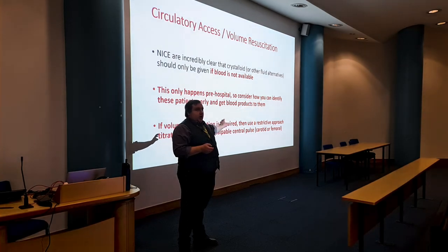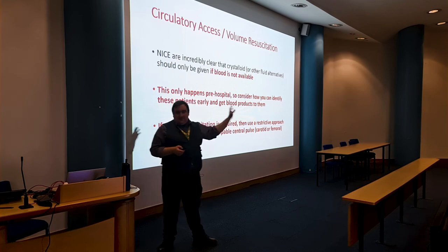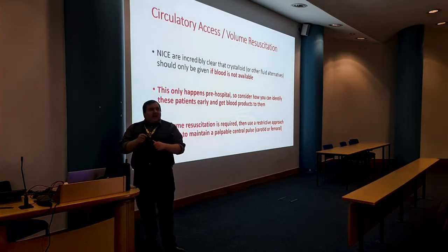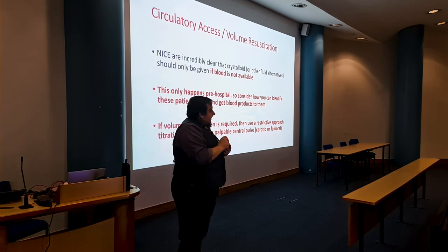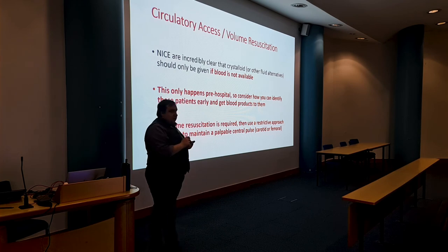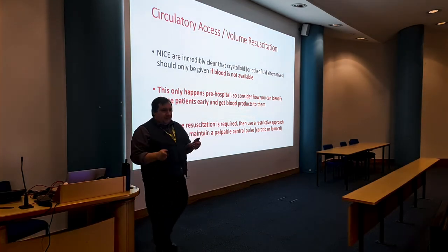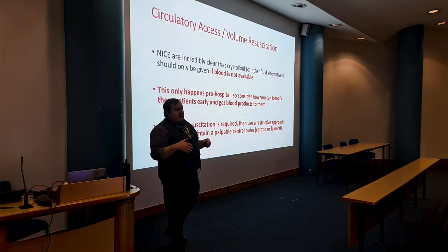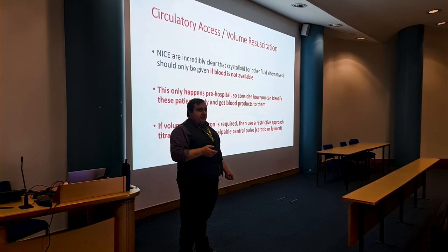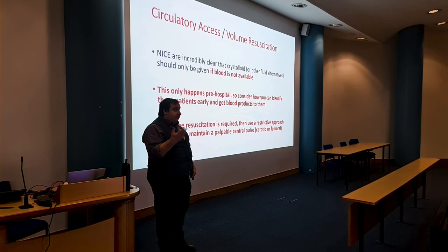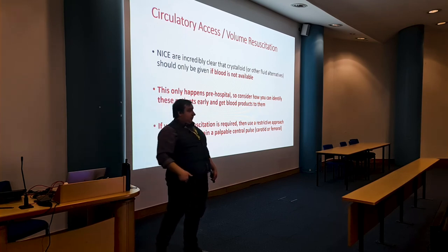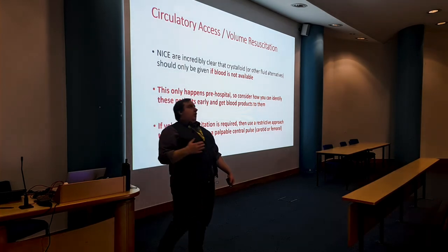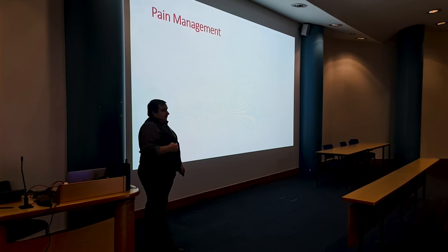Everyone should understand permissive hypotension and fluid restriction. If we give large amounts of IV fluid it doesn't carry oxygen, causes haemodynamic and electrolyte derangements, and can bust clots. JRCALC says target a systolic of 60, but you may not get a reliable blood pressure from a trauma patient, so aim for a palpable central pulse — carotid or femoral — if you're forced to give fluid.